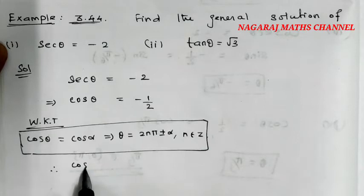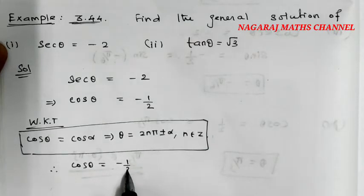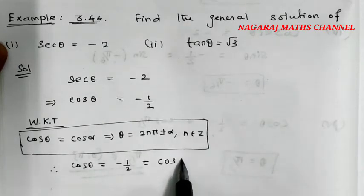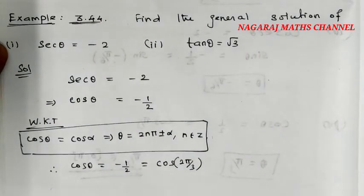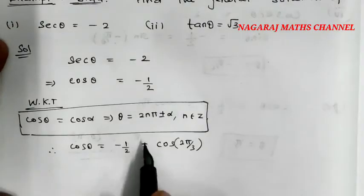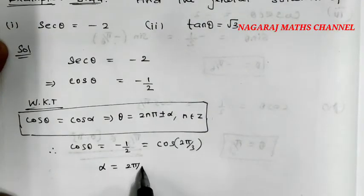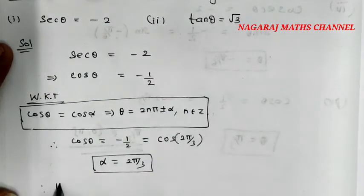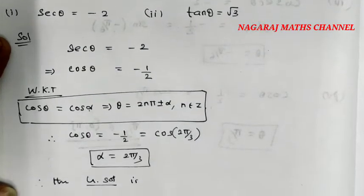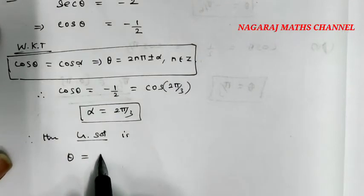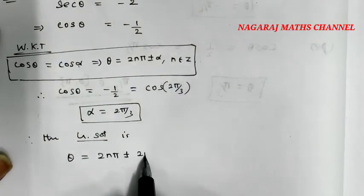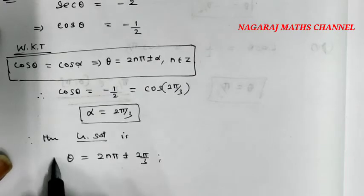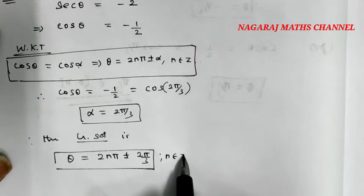Now, cos θ equals minus 1 by 2, and we know that cos(2π/3) equals minus 1 by 2. So cos θ equals cos(2π/3). Therefore, the general solution is θ equals 2nπ plus or minus 2π/3, such that n belongs to Z.